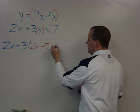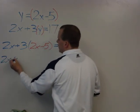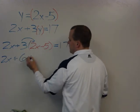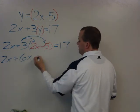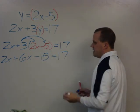So if I start working through this problem, I've got 2x. 3 times 2 is 6x. 3 times negative 5 is negative 15 equals 17.